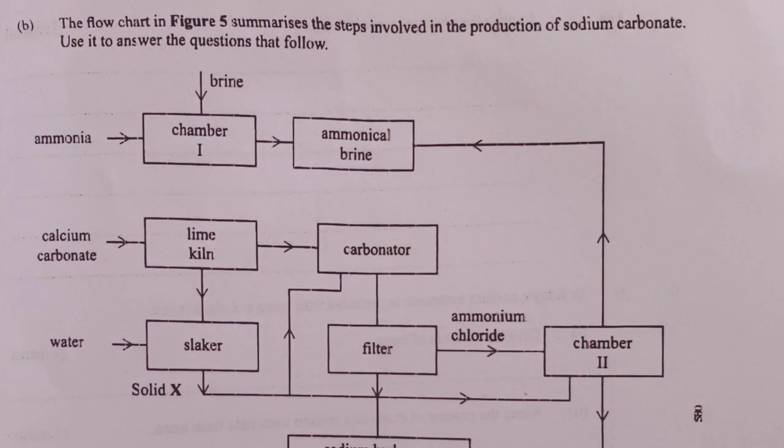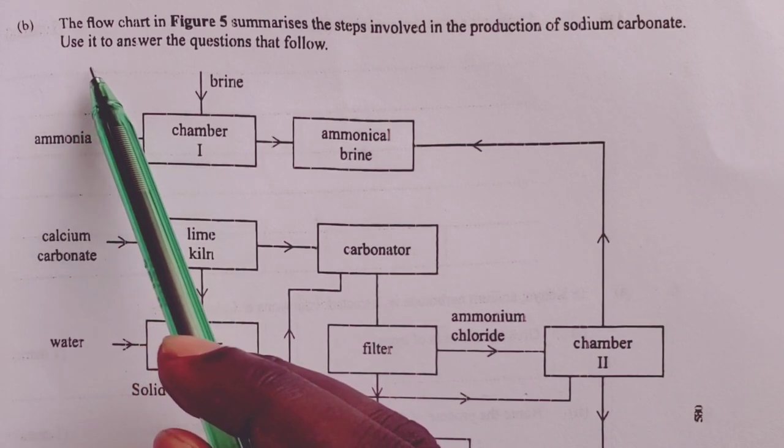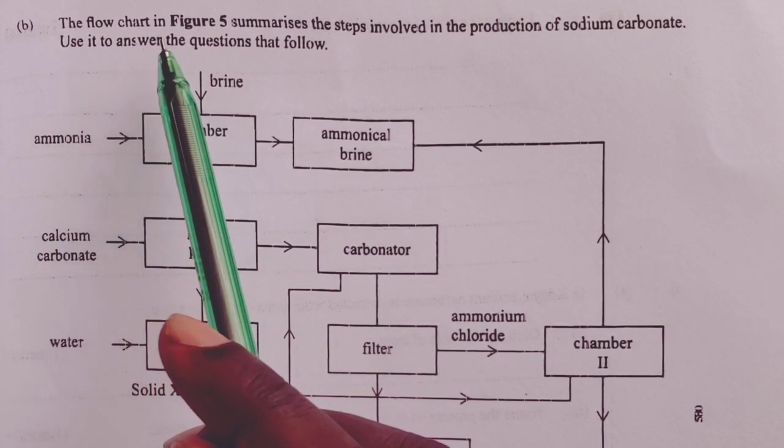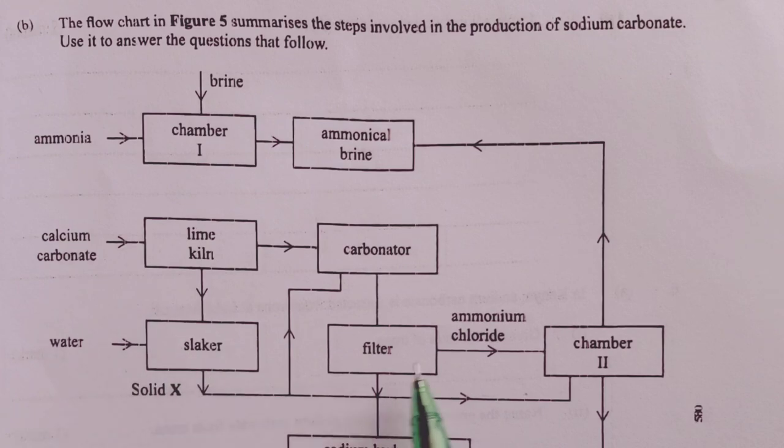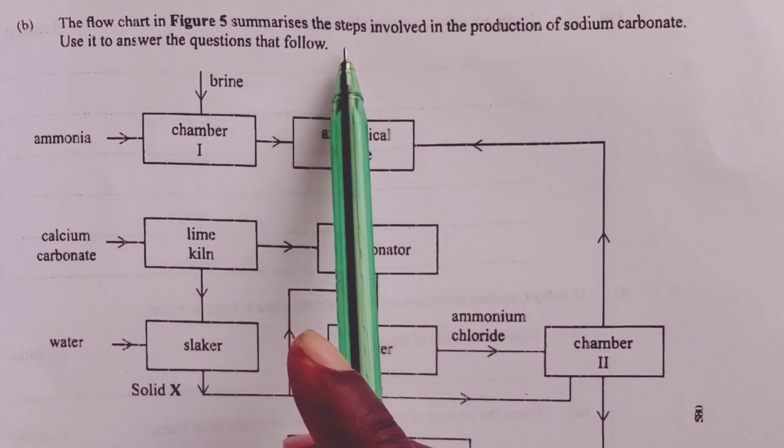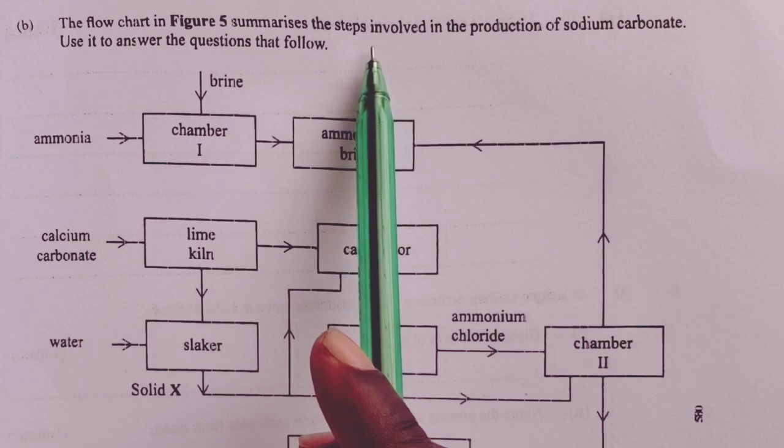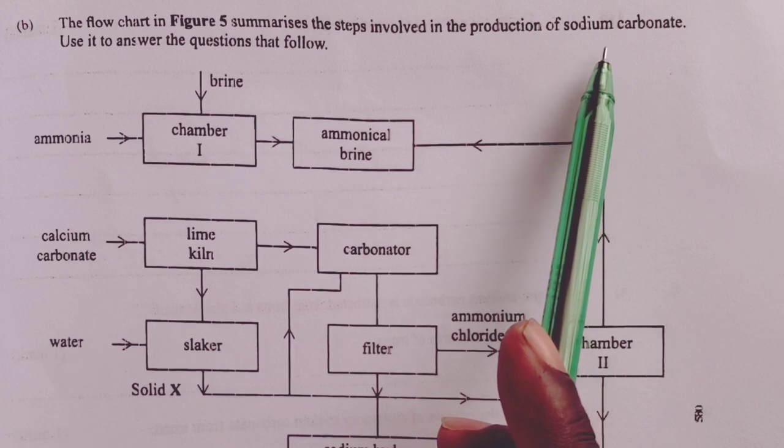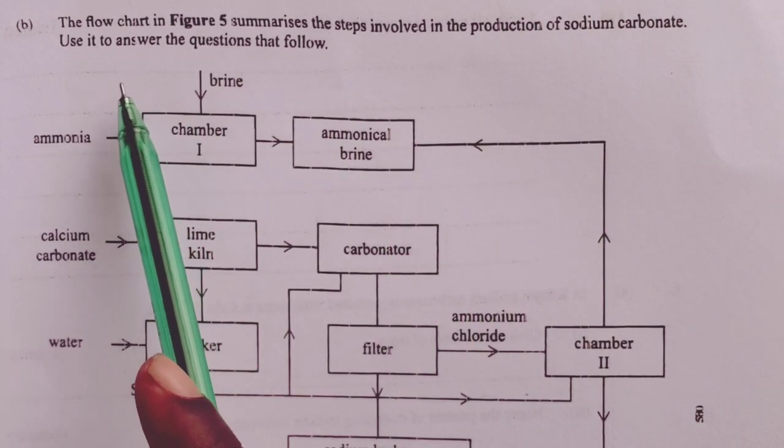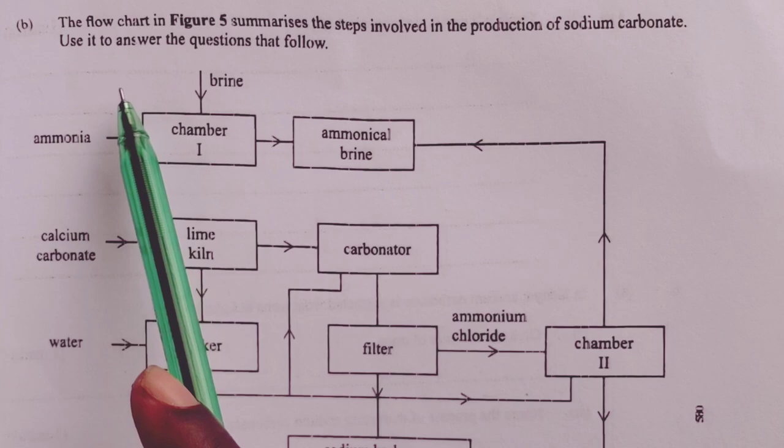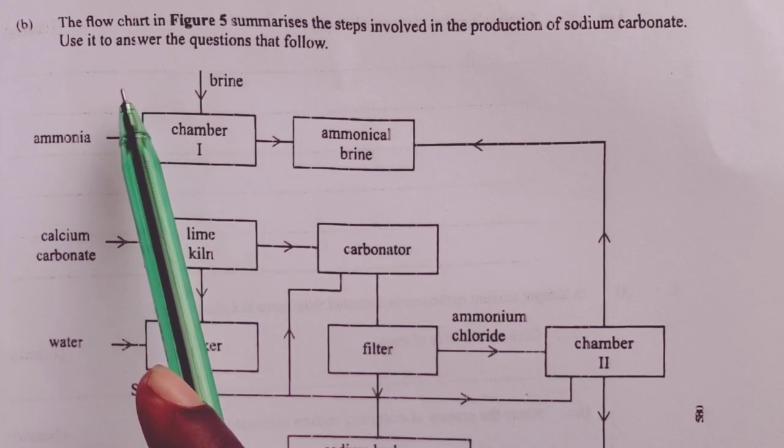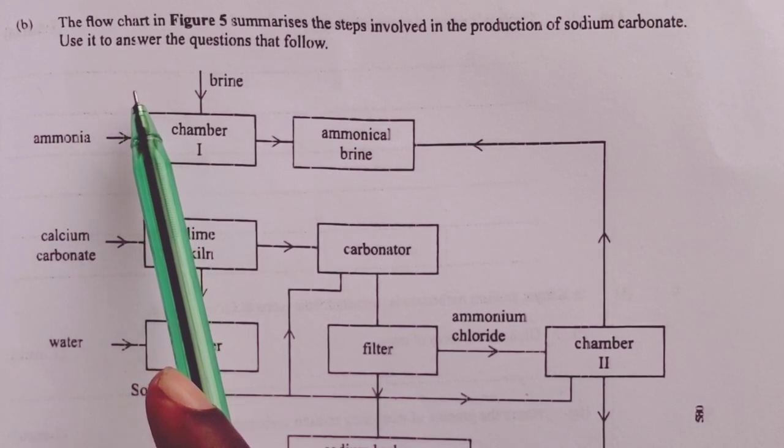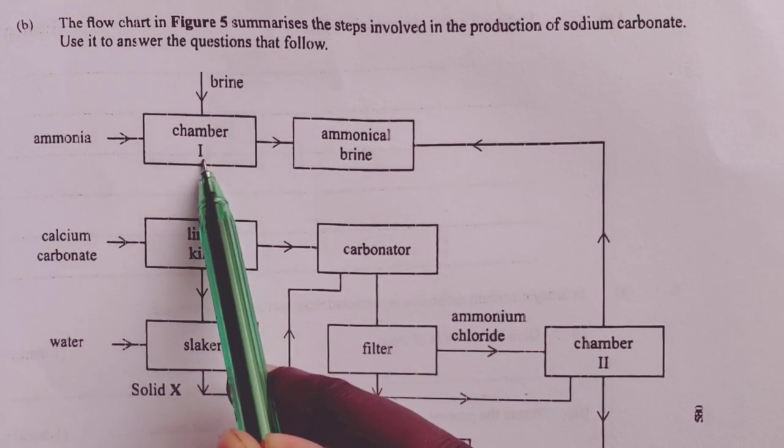Moving on to part B, we are told that the flowchart in figure 5 here summarizes the steps involved in the production of sodium carbonate. So we are told to study it, then use it to answer the questions that would follow. We begin in chamber 1, which is usually our absorption tower.